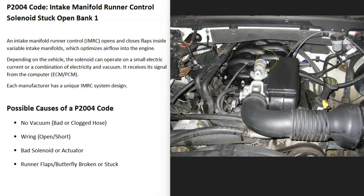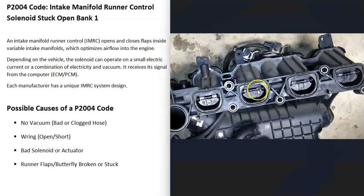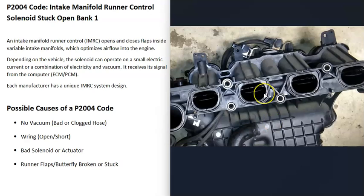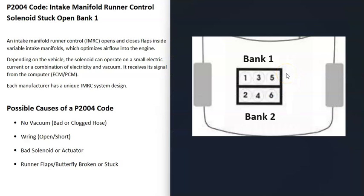Some engines have what's called the intake manifold runner system. This system is located inside the intake manifold and it controls the airflow going into the cylinders. It does this with little flaps inside the intake that can close or open up to control airflow. When you get a P2004 code, the computer is seeing that these flaps are stuck open and not working correctly.